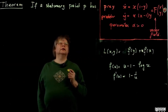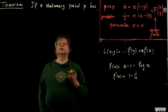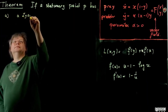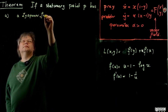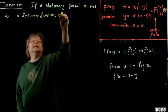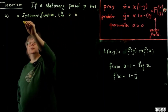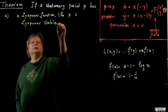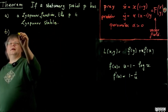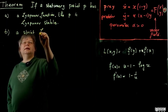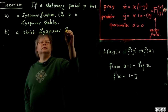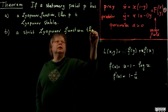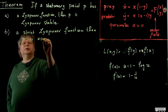The theorem is: if a stationary point P has a Lyapunov function, then P is Lyapunov stable. If it has a strict Lyapunov function, then P is asymptotically stable.